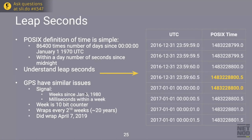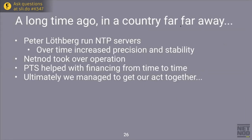GPS has also similar issues to POSIX, because inside the GPS signal one week is a 10-bit counter. That means the GPS signal wraps every 2^10 weeks — about 20 years. There was a wrap on April 7, 2019, and yes, there was some equipment that went down because it had hard-coded which 20-year epoch it was going to work in. The intention from the manufacturer was not that it would survive in production across April 7, 2019. It will now take another 19 years before we have another wrap in the week counter in GPS.